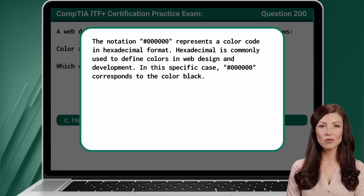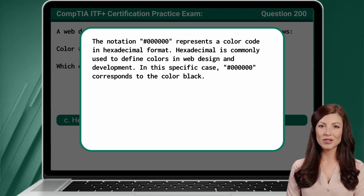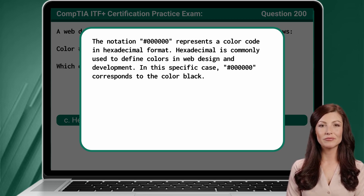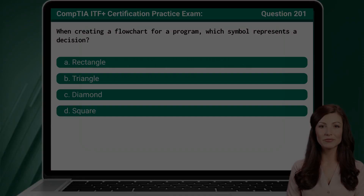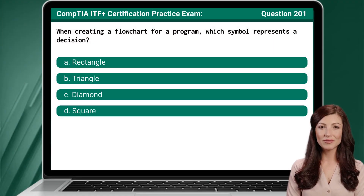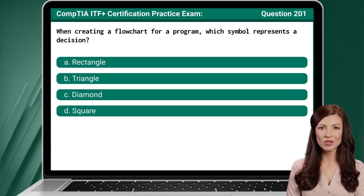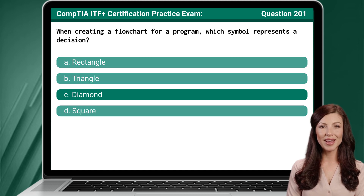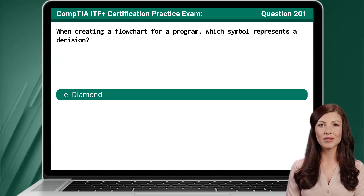Wow, you have completed 200 questions. How about one more question, as a reward for your hard work? Question 201. When creating a flowchart for a program, which symbol represents a decision? The answer is C: Diamond.